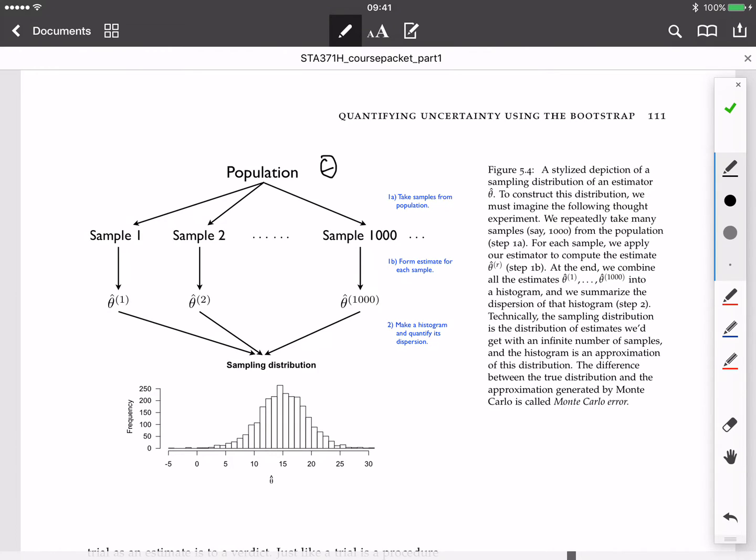We don't have the whole population. We only have a sample. So let's imagine taking one sample over here. This is sample 1. And how big is that sample? Maybe it's 15. Maybe it's 100. However big it is. From that sample, we calculate our estimate. So maybe that's the sample mean. We call that theta hat.